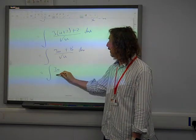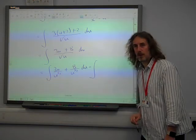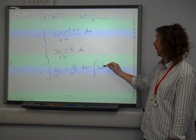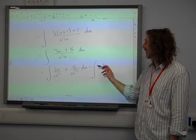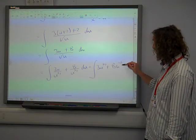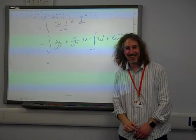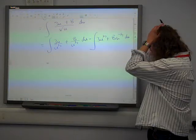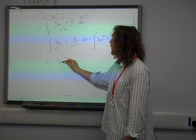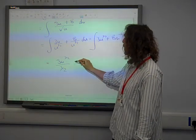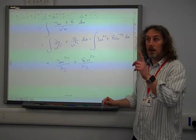It's the integral of 3u over u to the half plus the integral of 8 over u to the half. And that, before we actually integrate it, is... It's the integral of 3u. It's okay, now we're going to have 2. That is 3u to the half plus 8u. It's 13u. 3u to the 3 over 2, plus 8u to the half over a half, plus c.